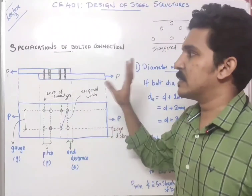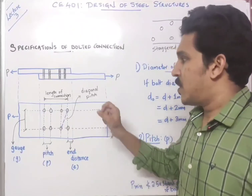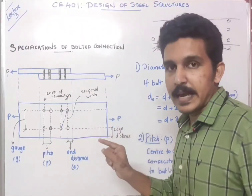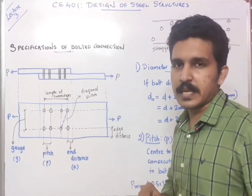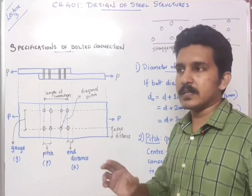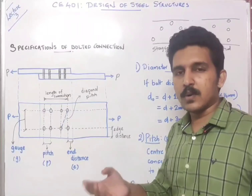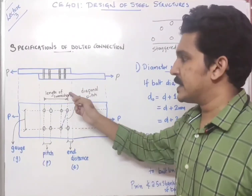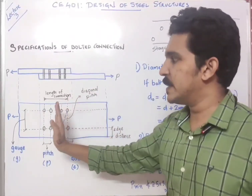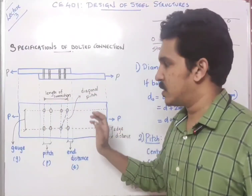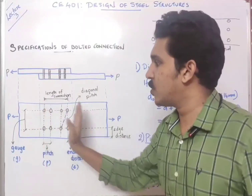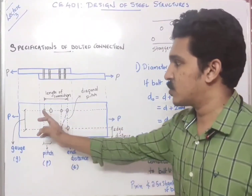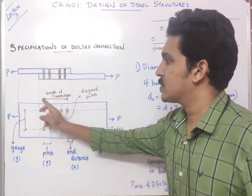These are the basic important terms involved. Another important term is the length of connection, denoted by capital L or Lc. The length of connection is the distance between the outermost bolt holes in the connection. These are the basic specifications used in the design.